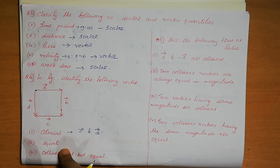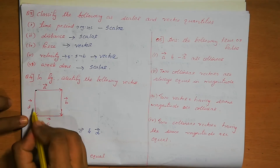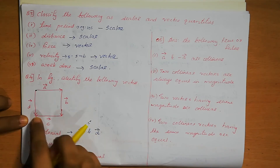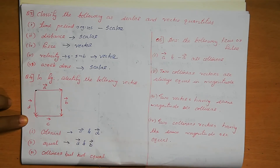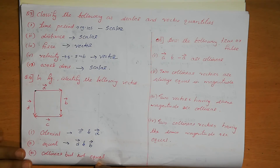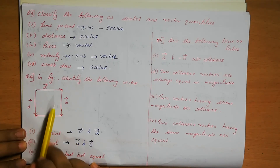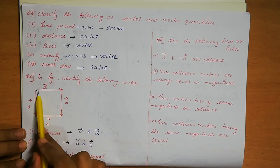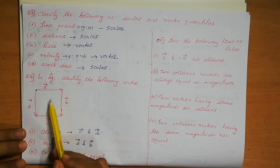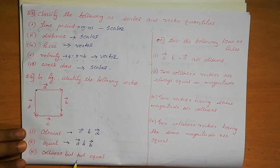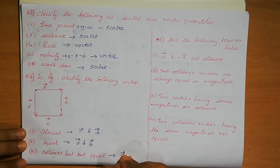Next, equal vectors. Two vectors are equal when they have the same magnitude and the same direction. Here, vectors D and B are in the same downward direction. If two vectors have the same direction and the same magnitude they are called equal vectors. So vector D and vector B are equal. Next, collinear but not equal. Vectors A and C are collinear — they are parallel — but their directions are opposite, so they are collinear but not equal. Therefore vector A and vector C are collinear but not equal.